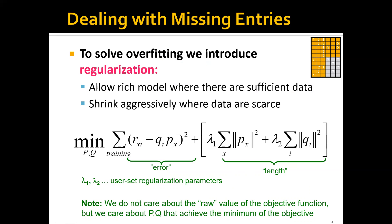To give more intuition, let's say that we have a user x and the corresponding factors are px. If this user x has rated a lot of movies, then a large part of the value in the objective function will concentrate on the first term. Therefore, when optimizing this objective function, the model will automatically focus on fitting the ratings of the matrix. But if this user has rated only one or two movies, a larger part of the objective function will concentrate on the regularization term, and the model will automatically shrink the length or norm of px aggressively.